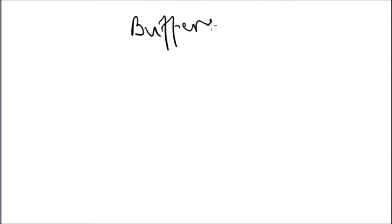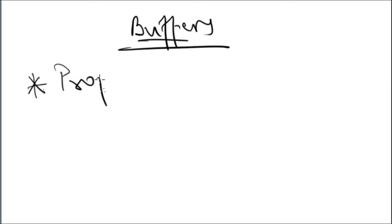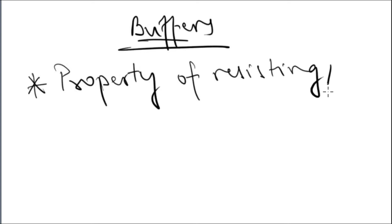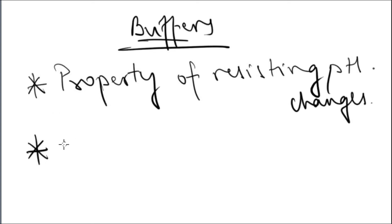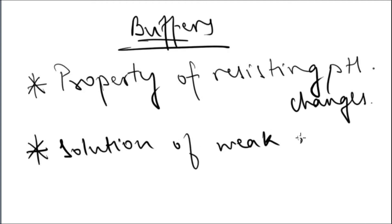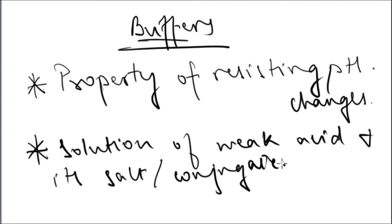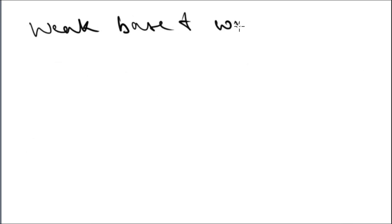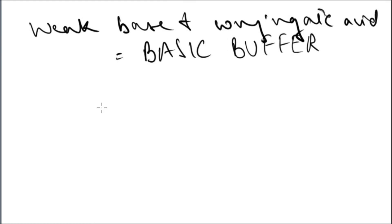Moving on to buffer solutions. You need to remember two properties: first, buffers have the property of resisting slight changes in pH. Second, a buffer solution is defined as a solution of a weak acid or weak base and its conjugate salt. You can have an acidic buffer — a weak acid and its conjugate base — or a basic buffer — a weak base and its conjugate acid.